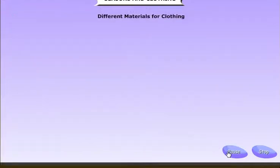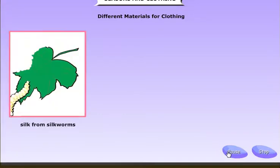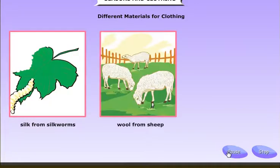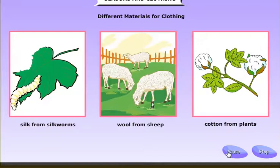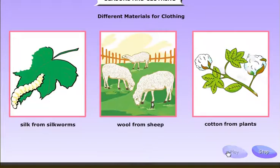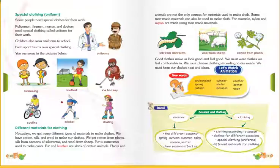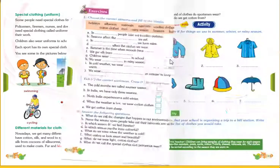We get many different types of materials to make clothes. We get silk from silkworms, wool from sheep, and cotton from plants. The fourth lesson, Seasons and Clothing, is now completed.